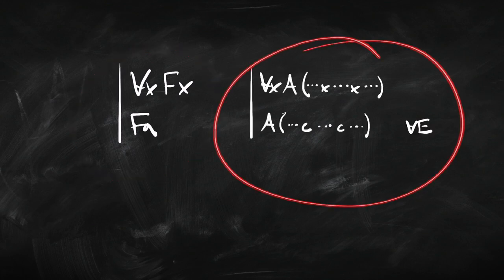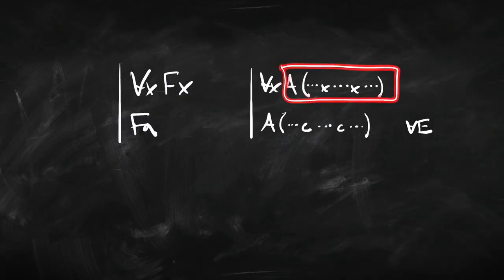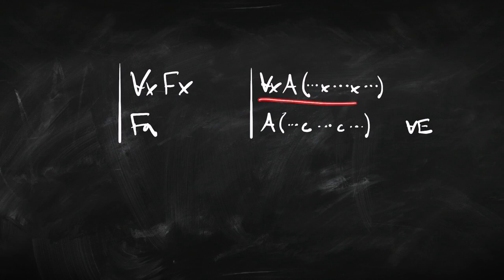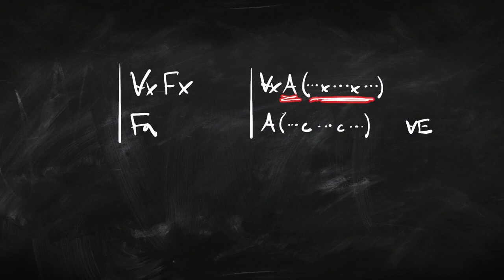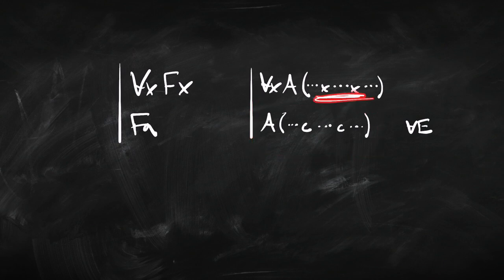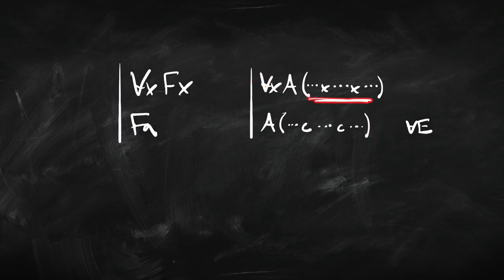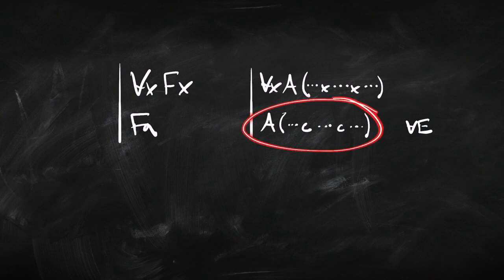The general form of this rule for universal elimination looks like this. We've got some sentence A that has some instances of x as a free variable — bound by the quantifier at the front. This is referring to any universally quantified sentence A with some occurrences of x in it. This is exactly that same sentence with all the x's replaced by a name c. To apply the rule, we get rid of the universal quantifier and replace all of the x's that were bound by this quantifier with any name c that we like. We can keep repeating this rule with different names.